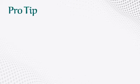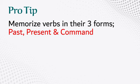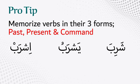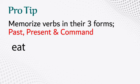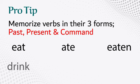A tip for beginners to memorize Arabic verbs effectively: recite each verb in its three forms — past, present, and command. For example: shariba, yashrabu, ishrab; and akrama, yukrimu, akrim — the same way we used to memorize English verb forms in school, like eat, ate, eating; or drink, drank, drunk.